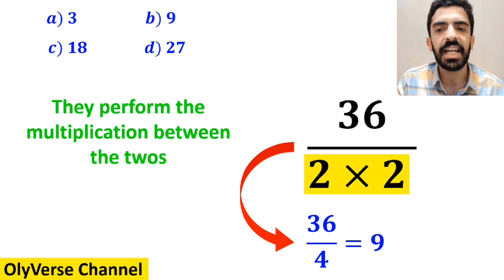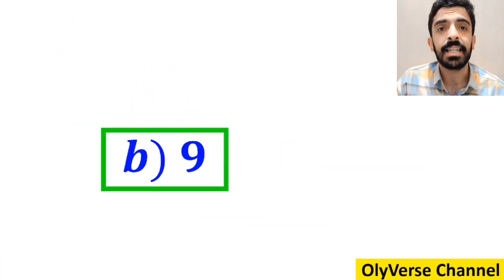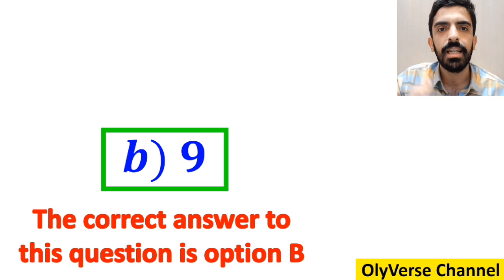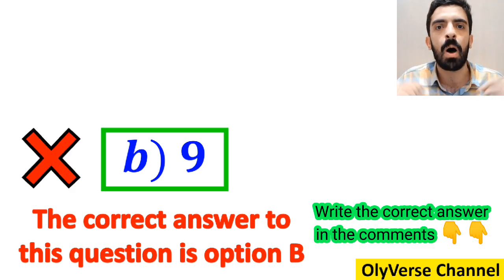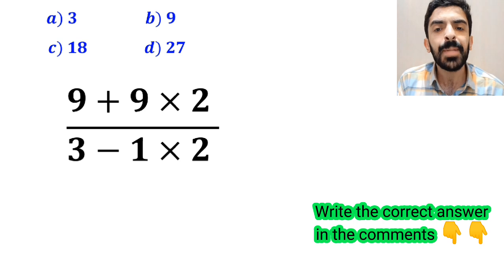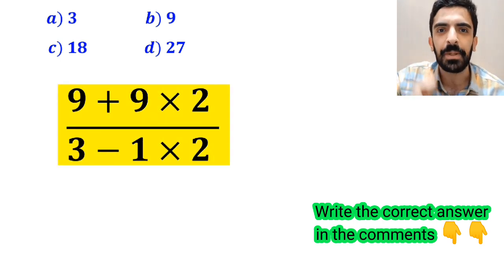Then, without any hesitation, they quickly say that the correct answer to this question is option B. However, this answer is absolutely wrong. All right, now let me explain step by step how to solve this expression properly.